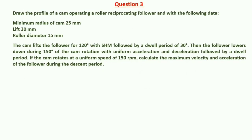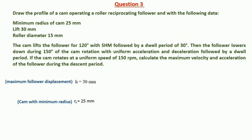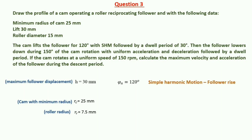Draw the profile of a cam operating a roller reciprocating follower. The minimum radius of the cam is RC = 25 mm. The lift H = 30 mm. The roller diameter is 15 mm, so the roller radius RR = 7.5 mm. The cam lifts the follower for phi A = 120 degrees with Simple Harmonic Motion (SHM).